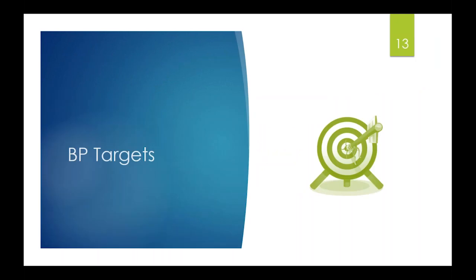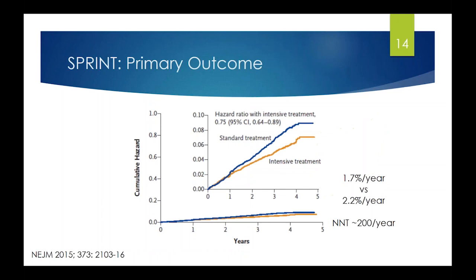Shifting to blood pressure targets, you can't really discuss this without talking about SPRINT. SPRINT was the Systolic Blood Pressure Intervention Trial, with primary results published at the end of 2015. It randomized about 9,300 participants with hypertension and at least one additional cardiovascular risk factor to a target systolic blood pressure of less than 120 — the intensive group — or less than 140 — the standard group — with good separation achieved between the arms.